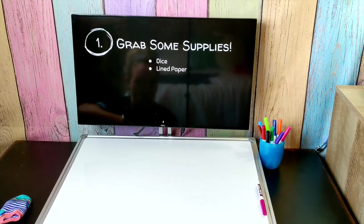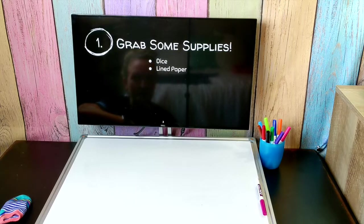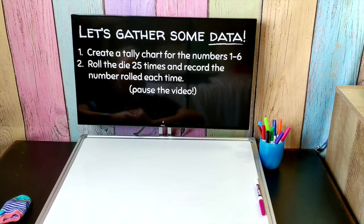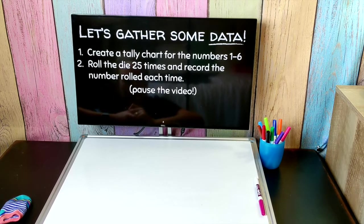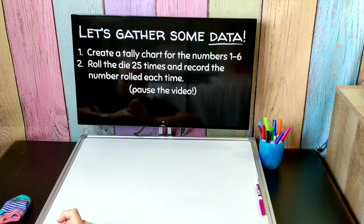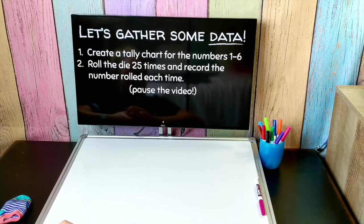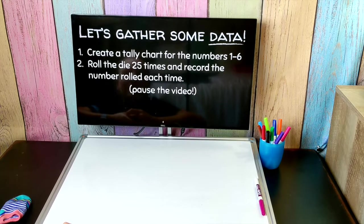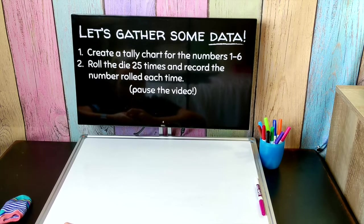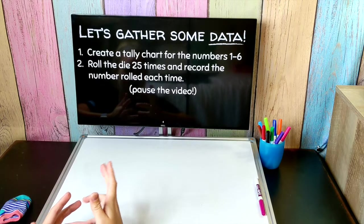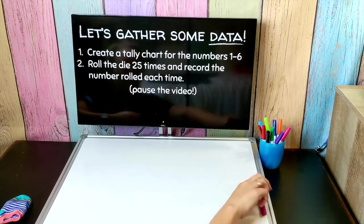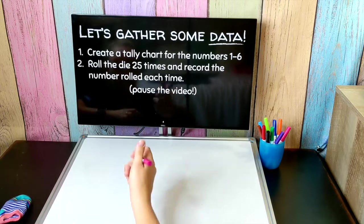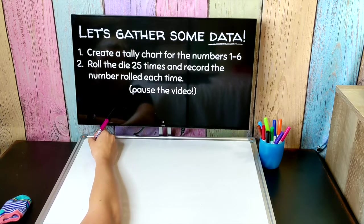Let's go ahead and generate some data using the materials that you have. Data is basically information that comes from some sort of source. We like to create graphs so that people can see and understand that data easily. The data that we are going to generate is the numbers that we roll on a die. What you're going to do is create a tally chart for the numbers one through six.